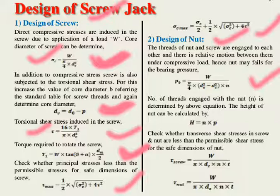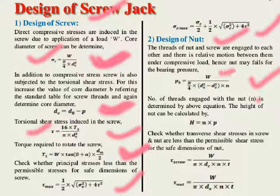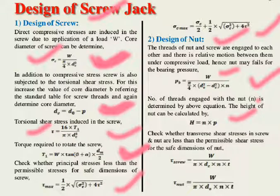n is the number of threads engaged with the nut, determined from the bearing pressure equation. With the values of W, d₀, and dc known, we can calculate either n (number of threads) or pb (bearing pressure). Once n is found, the height of the nut is calculated as: h = n × p.